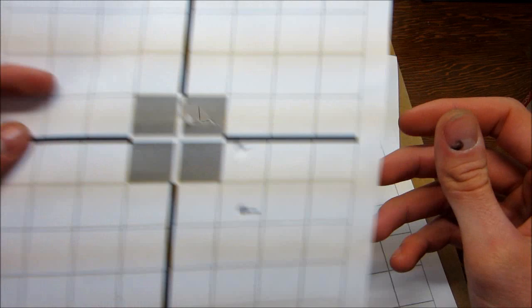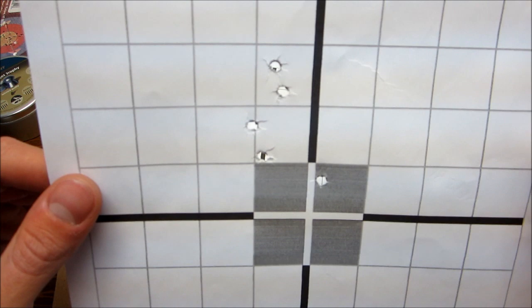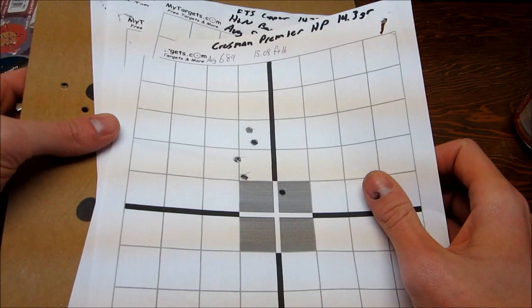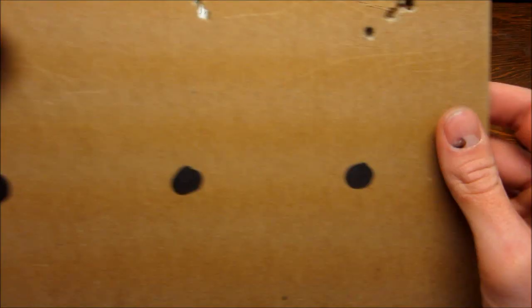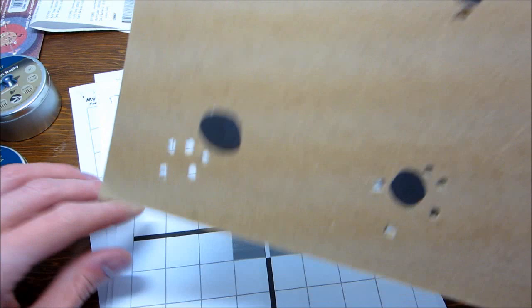The next one's Crossman Premier. Not too good. It's all right, I guess. And these were all at 20 yards, but it seemed like this was a little off. Because these are some other groups that I've shot with the Premieres, and these were at 15 yards, but it should be pretty close, that one was at 20.